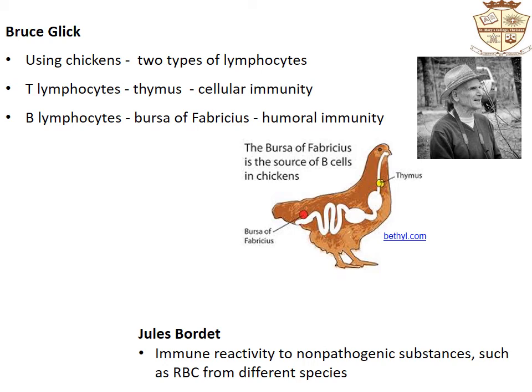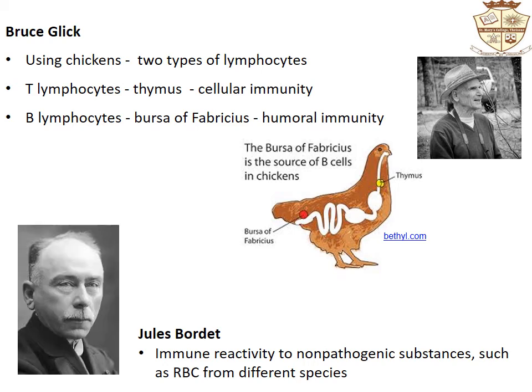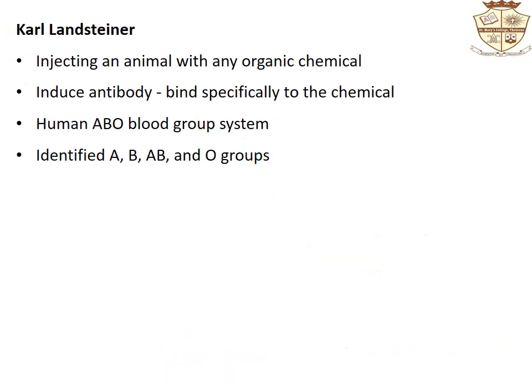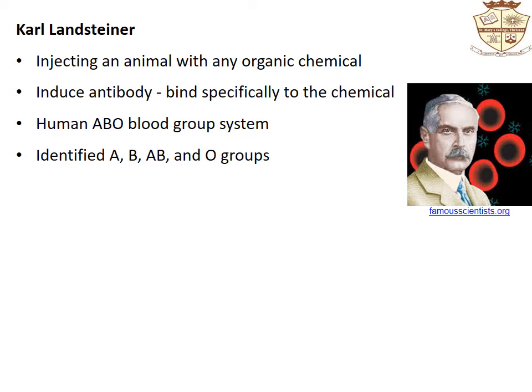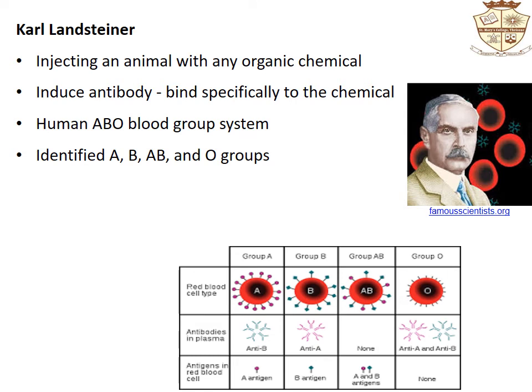In around 1900, Jules Bordet demonstrated specific immune reactivity to non-pathogenic substances such as red blood cells from different species. The work of Karl Landsteiner showed that injecting an animal with almost any organic chemical could induce production of antibodies that would bind specifically to that particular chemical. He demonstrated the human ABO blood group system and identified the underlying mechanism by which clumping or agglutination of red blood cells occurs during mixing of blood from two individuals.